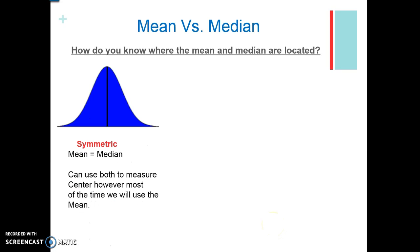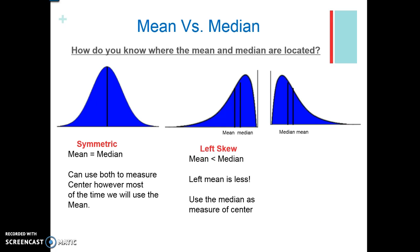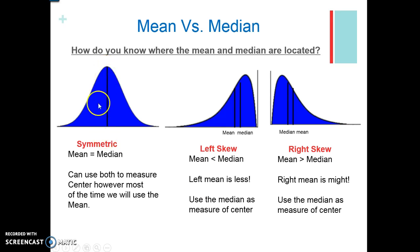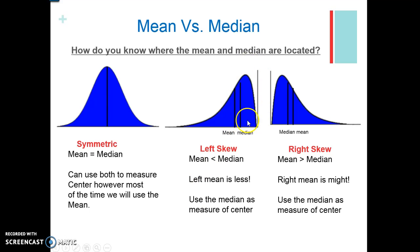If the distribution is symmetric, the mean and median are about the same and you can use both measures of center — though get used to using the mean along with standard deviation. If it's skewed to the left with some low-lying values, the mean is pulled down by those values, so the mean is less than the median. We use the median as measure of center because it gives a better idea of where the middle is. If it's right-skewed with high values, the mean is pulled up — it's a little higher than the median — and we still use the median as measure of center.